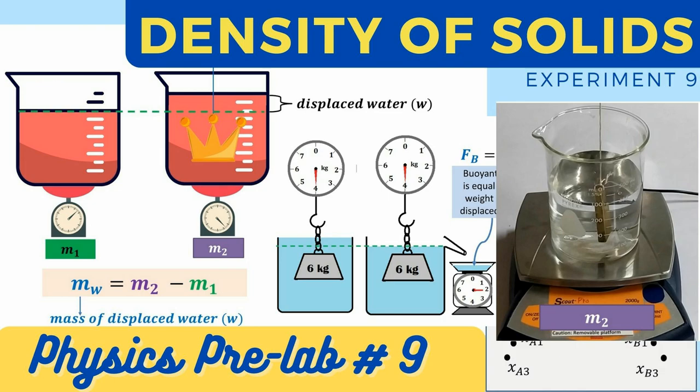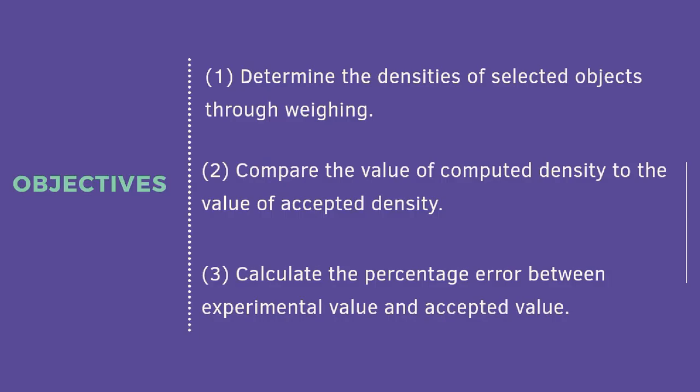The objective of this experiment is to determine the densities of selected objects through weighing. Second, we will compare the values of the computed density to the value of the accepted density. And third, calculate the percentage error between the experimental value and the accepted value.